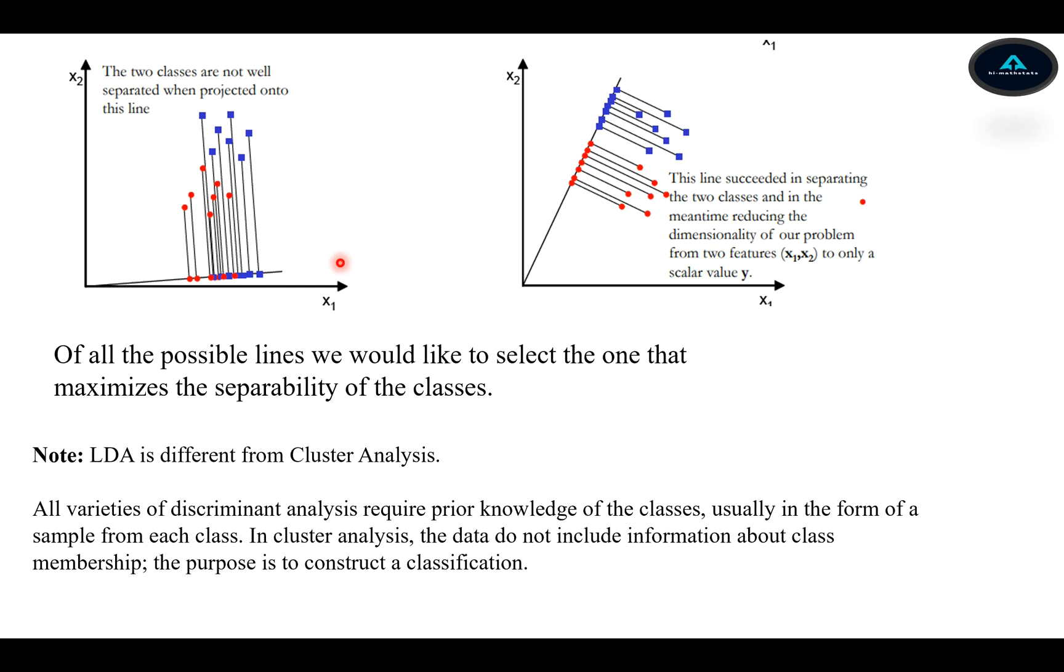If we look first here, the two classes are not well separated when we project them into this line. However, if we look into the second diagram, we can see that this line has succeeded in separating these two classes, and in that process it reduces the dimensionality of our problem from two features to only one scalar value of Y.